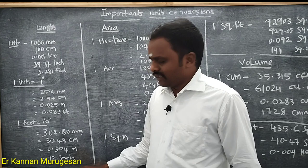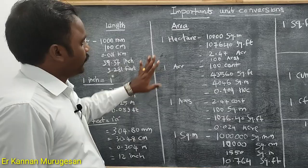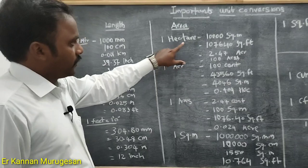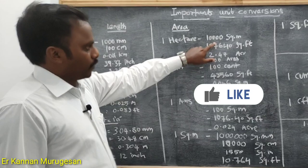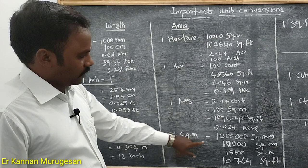Let's look at area. If you use meters, 1 hectare is 10,000 square meters. It is 100 meters by 100 meters. If you use square meters, the number of m is 1 meter.